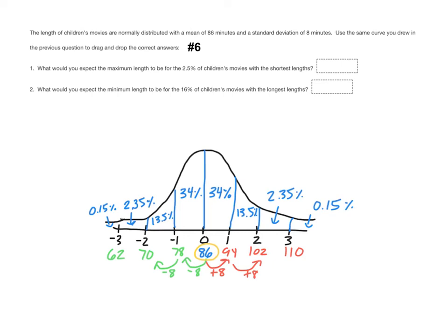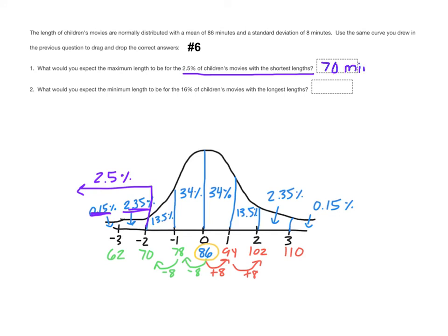The last question we're going to look at today is number six, which goes back to the same normal distribution from number five — children's movies with a mean of 86 minutes and a standard deviation of 8 minutes. Question one asks: what would you expect the maximum length to be for the 2.5% of children's movies with the shortest length? The shortest lengths are the smaller numbers on the left side of the curve. That 2.5% comes from 0.15% plus 2.35%. We don't know the minimum length, but the maximum length for that section is 70 minutes.